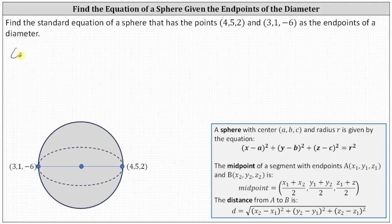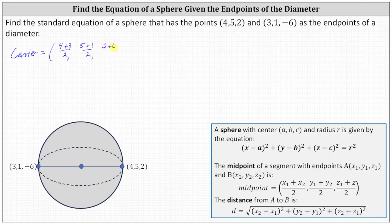The center has an x-coordinate of the sum of 4 and 3 divided by 2, a y-coordinate of the sum of 5 and 1 divided by 2, and a z-coordinate of the sum of 2 and negative 6 divided by 2. Simplifying: the x-coordinate is 7/2, or 3.5; the y-coordinate is 6/2, or 3; and the z-coordinate is -4/2, which is -2.